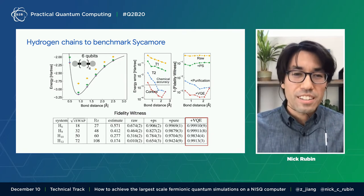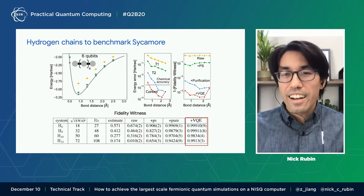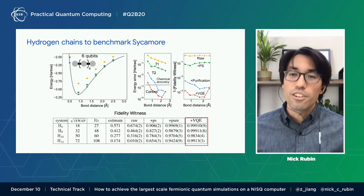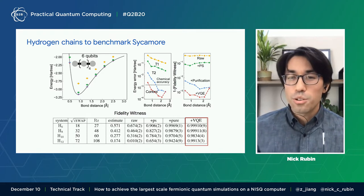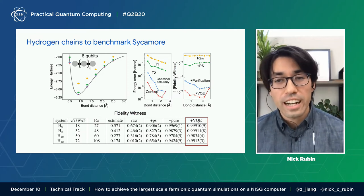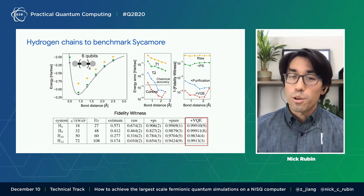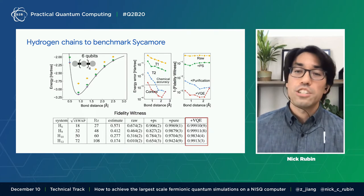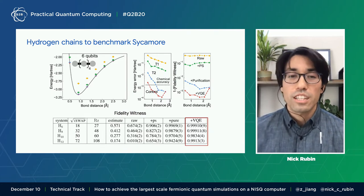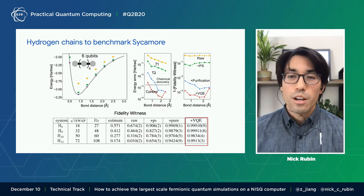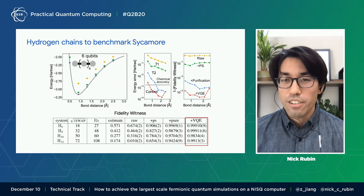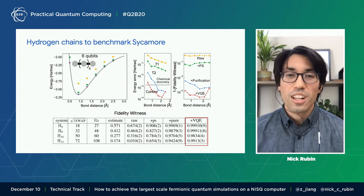I think an important thing to point out is that with these error mitigation schemes layered on top of each other, we can get to very high circuit fidelities for large circuits — in the 99% fidelity range — but we're still barely reaching the accuracy needed to claim that we're achieving chemical accuracy. And so what this points to is that ground state calculations are an area that is very hard to compete with classical methods.